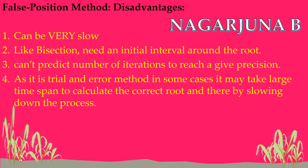The fourth disadvantage: it is a trial and error method and in some cases may take a large time span to calculate the correct root, thereby slowing down the process. Since it depends on the initial interval, if the initial interval is very large, the number of iterations increases and more time is taken to calculate the root for a given equation using the false position method, also called the Regula Falsi method.